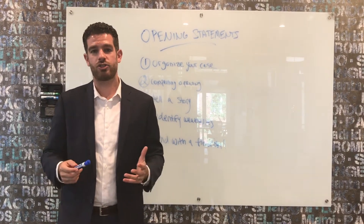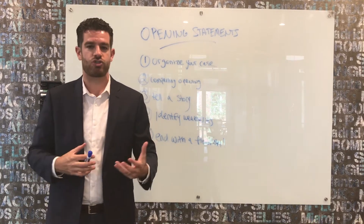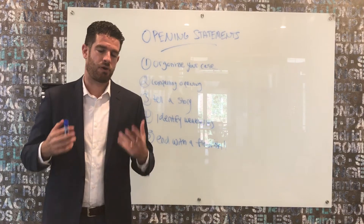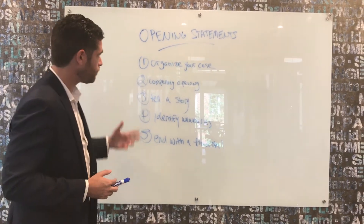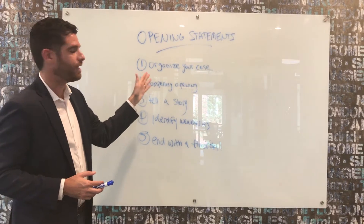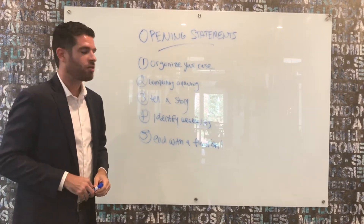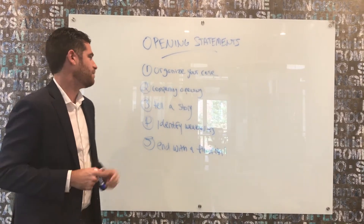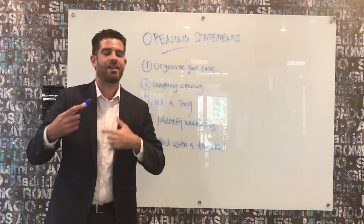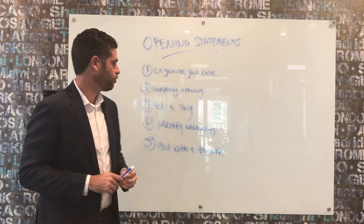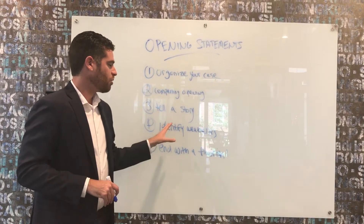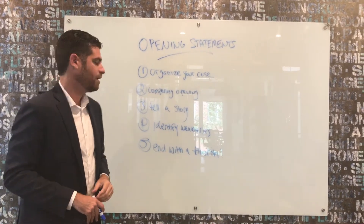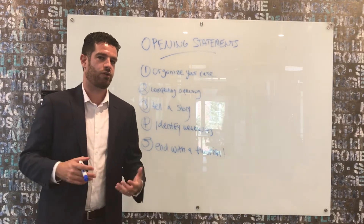What we're going to talk to you about is how, in broad strokes, to craft a really effective opening statement, and that's going to comprise five points. We're going to talk about using the opening statement to organize your case for the jury, providing the jury with a compelling opening, telling a compelling narrative story, identifying weaknesses for the jury, and ending the opening statement with a flourish.